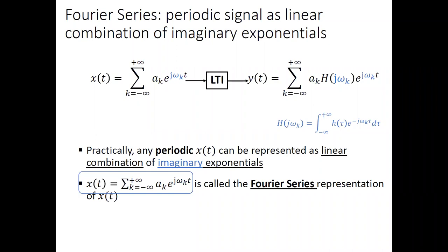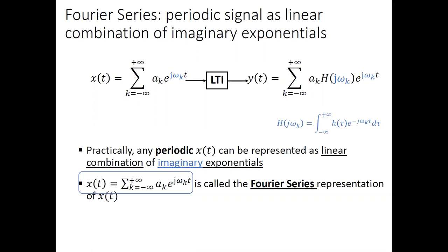By Euler's formula, both the real and imaginary parts of e^{jωt} are sinusoidal. Because of the time-invariance and linearity of the LTI system, if the input has this structure, the output has the same structure — the same coefficient linear combination — with an additional factor H(jωk) defined by an integral involving the unit impulse response h. The first step is to express x(t) as such a linear combination, finding the coefficients a_k and frequencies ω_k. That representation is called the Fourier series for x(t).